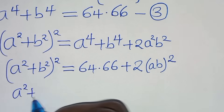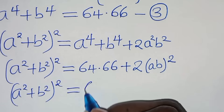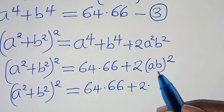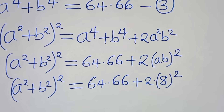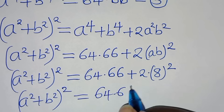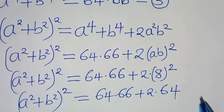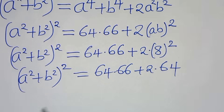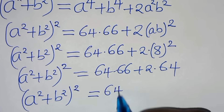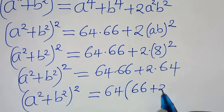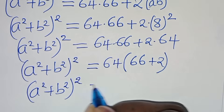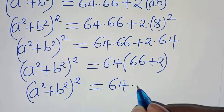So a squared plus b squared raised to the power of 2 equals 64 times 66, plus 2 times ab squared. From equation 2, ab equals 8, so we have plus 2 times 8 squared, which equals 64. So a squared plus b squared raised to the power of 2 equals 64 times 66 plus 64. Factoring out 64, we have a squared plus b squared raised to the power of 2 equals 64 times (66 plus 2), which is 64 times 68.